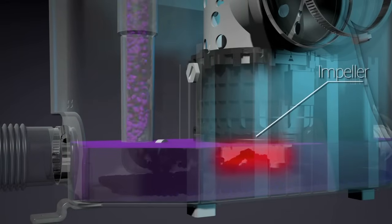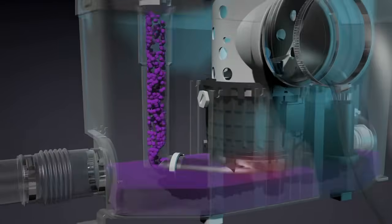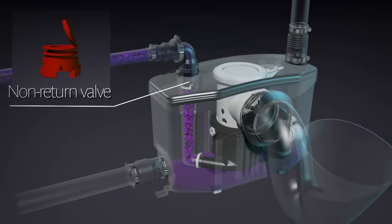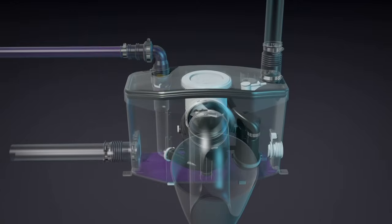Once it exits the pump, the waste goes through a discharge elbow which connects to the 3/4 inch pipe. A built-in non-return valve prevents the wastewater from traveling back into the pump once the system turns off.